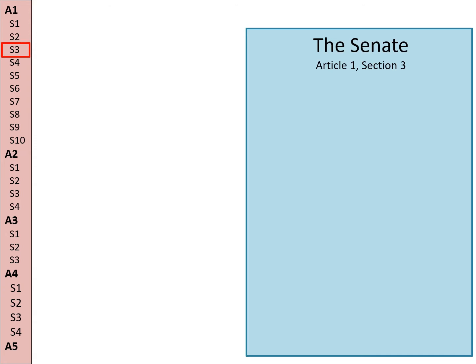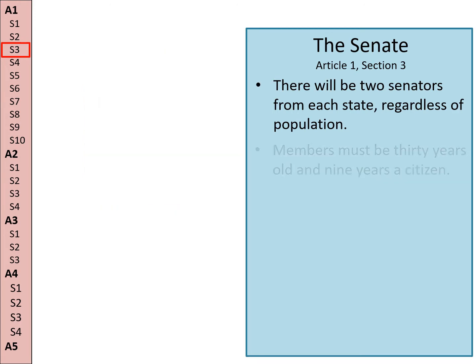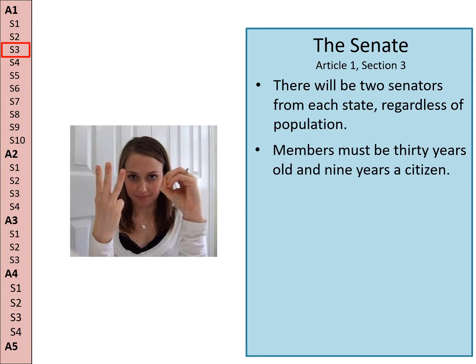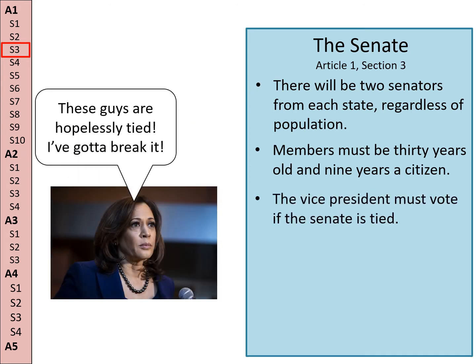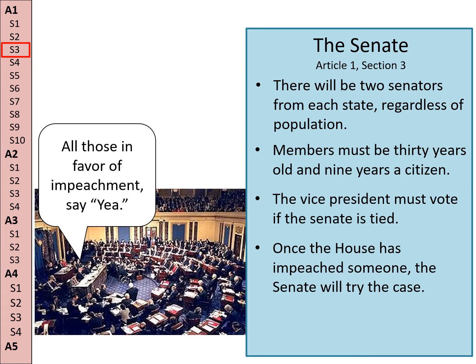Section 3: the Senate. There will be two Senators from each state, regardless of the state's population. Members must be 30 years old and be nine years a citizen. The Vice President must vote if the Senate is tied — since there are two from each state, there will always be an even number of Senators and we could end up in a tie. Once the House has impeached somebody, the Senate will try the case.